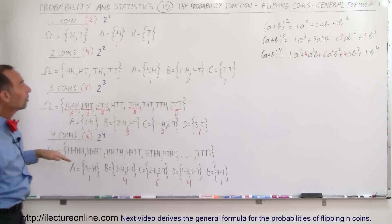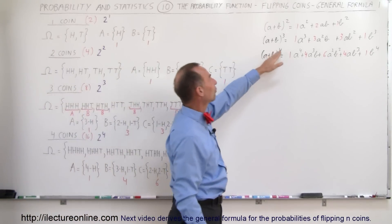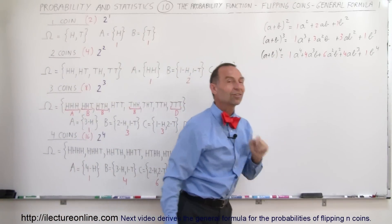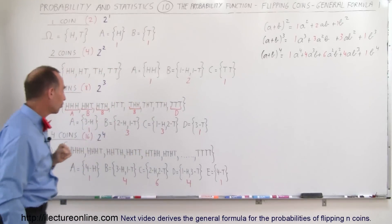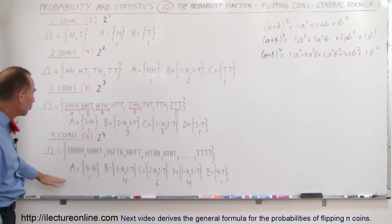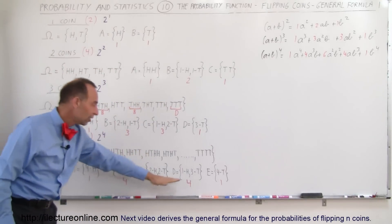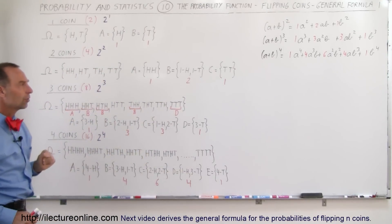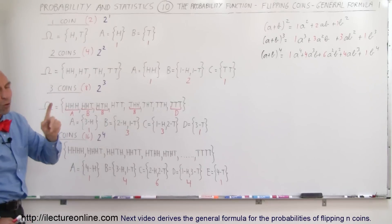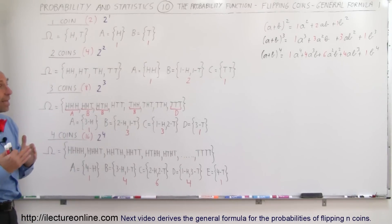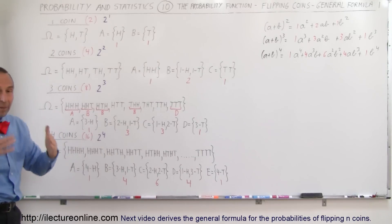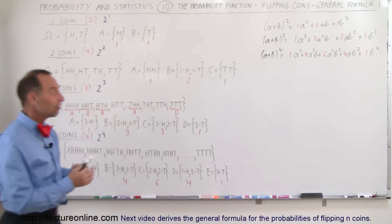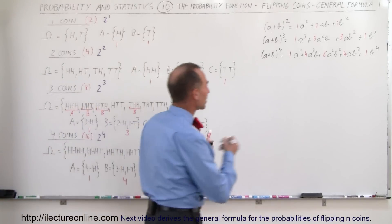So there's a lot of similarity between binomial expansions and the number of elements you find in the events of a sample space when you flip a certain number of coins. Flip two coins and the coefficients look just like those of a binomial expansion of a plus b squared. Use three coins and you have the coefficients of a plus b cubed. Four coins looks just like a plus b to the 4th power. And those coefficients, when you keep expanding them, should remind you of Pascal's Triangle.